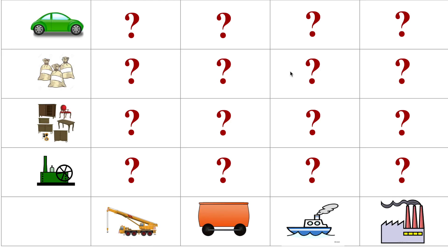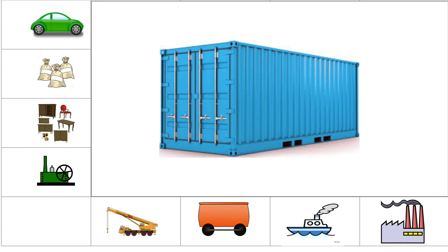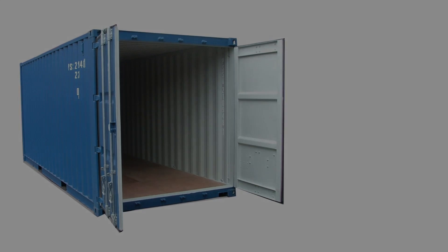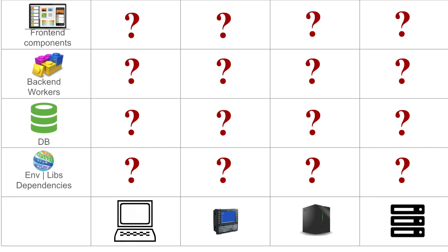If we look at a similar problem that existed in the shipping industry many years ago, we had different kinds of goods and had to ensure that every good could be shipped through multiple means to various platforms. There were so many different goods of different sizes and shapes, and ensuring a special shipping mechanism for every unique good was very challenging. We solved this problem in the shipping industry using containers — standard boxes into which you can pack your goods regardless of size, shape, weight, or color, and then ship them in a standard way to any location.